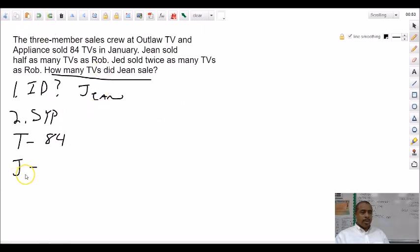Let's back that up. So, Jean, she sold half as many. So, how would we represent half as many? We don't know, though. So, we can't call it a number yet. One half. Good. So, one half X because we don't know how many Rob sold. And then Jed, he sold twice as many as Rob. So, then that would be 2X.